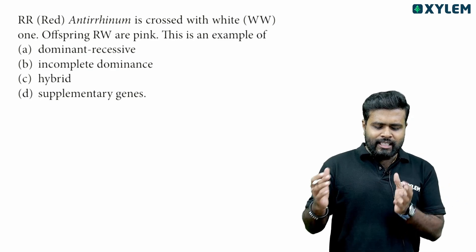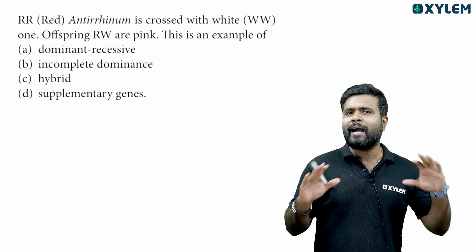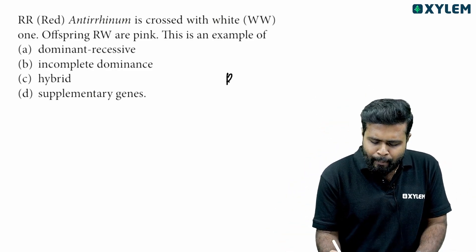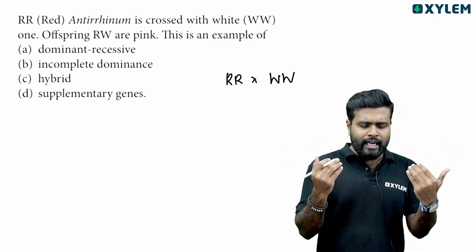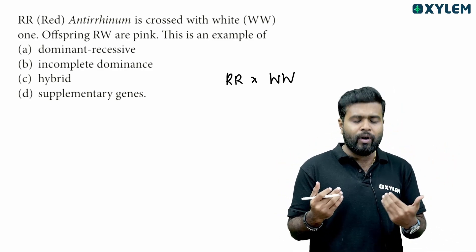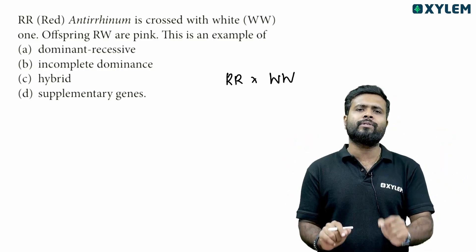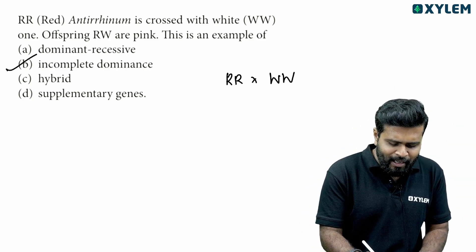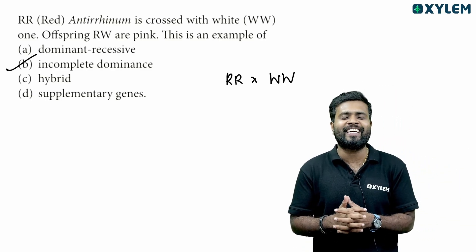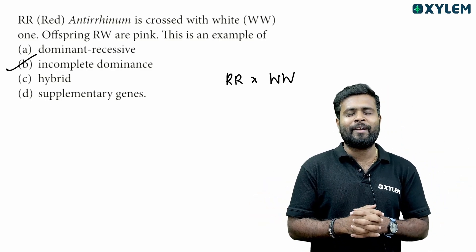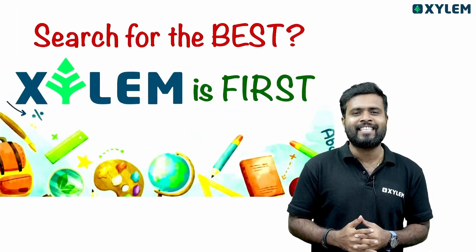Next question: Red Antirrhinum, that is capital R capital R, is crossed with white, capital W capital W. The offspring R W was pink. This is an example of incomplete dominance where a red and white cross produces pink offspring. Option D is the right answer.